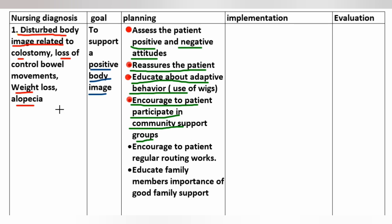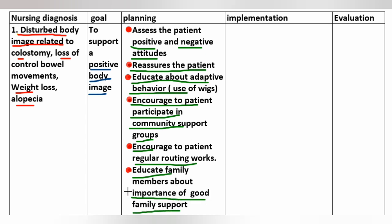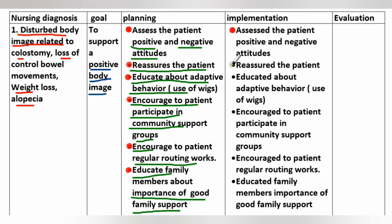Further planning for disturbed body image: encourage the patient to participate in community support groups, encourage regular routine activities, and educate family members about the importance of good family support. Implementation involves carrying out all of the above planned interventions. Evaluation to be completed later.